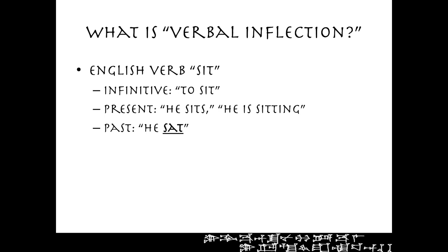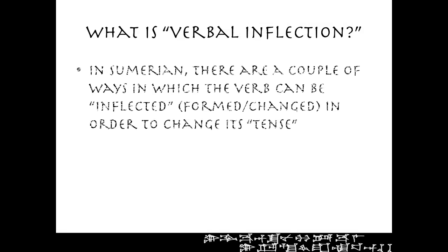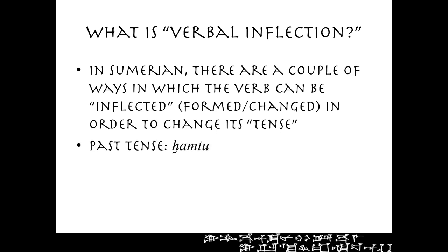And this is what, in one way, is going to happen in Sumerian. In the same way that in English we don't always inflect verbs the same way, Sumerian does not either. In Sumerian there are a couple of ways in which the verb can be inflected or changed in order to change its tense. Those two are called hamtu and maru. The hamtu is roughly the past tense and the maru is roughly the present or future tense.